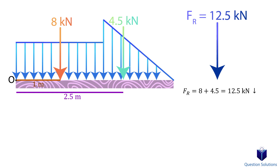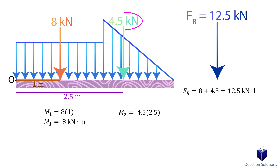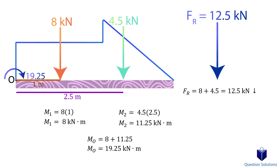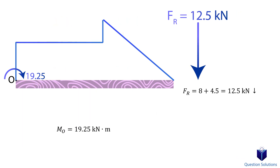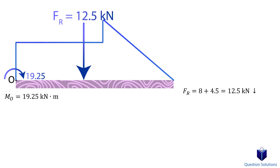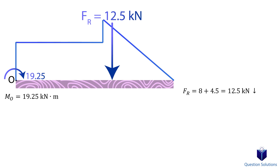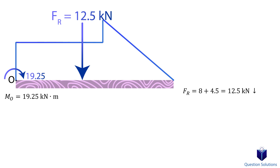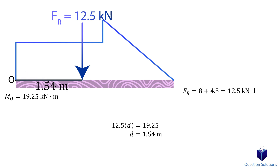To do that, we need to sum the moments about point O. Let's assume clockwise moments to be positive. So for the rectangle, we have force F1 — the force we found for the rectangular piece — times the distance from point O. Next, we have the triangle resultant force, and the distance from point O is 2.5 meters. The total moment created by the two forces would be the addition of these two values — that's 19.25 kN·m about point O. Since we're going to show a single resultant force, we have to make sure it's placed at a location that gives us that same exact moment. Let's assume we place the resultant force a distance d away from point O. All we need to do is set the resultant force times d equal to the total moment. This gives us d = 1.54 meters from point O.